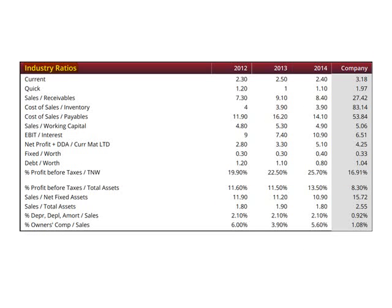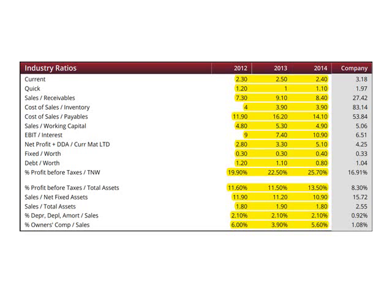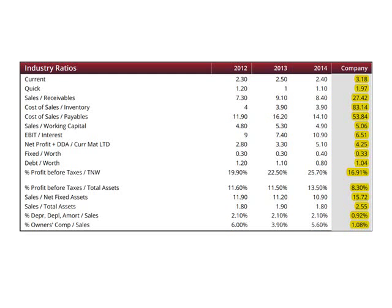The final table on this page deals with the industry ratios. Three years of industry data are provided to compare with the last year of company data. You may wish to discuss with your CPA or business advisor which of these ratios are most important to monitor for your business.